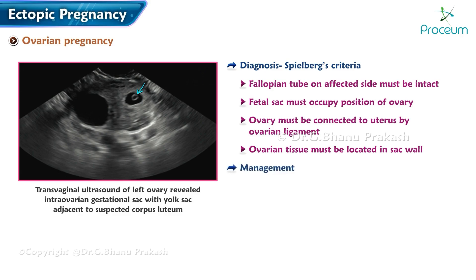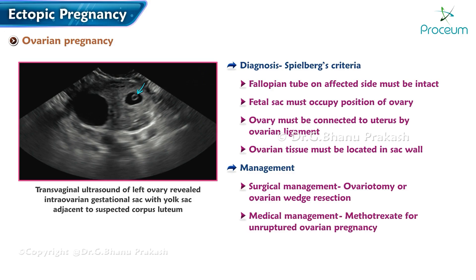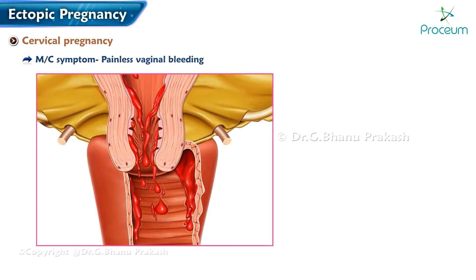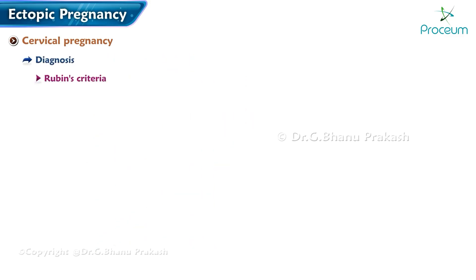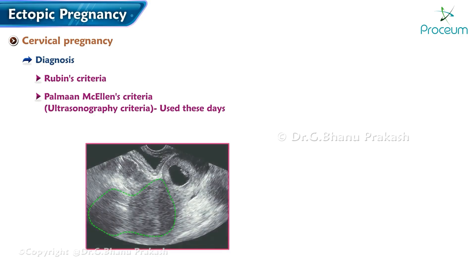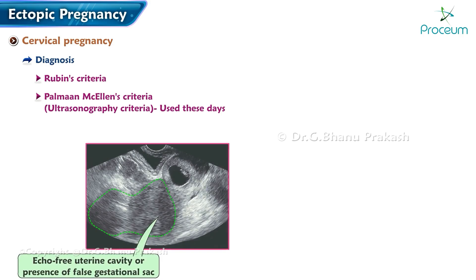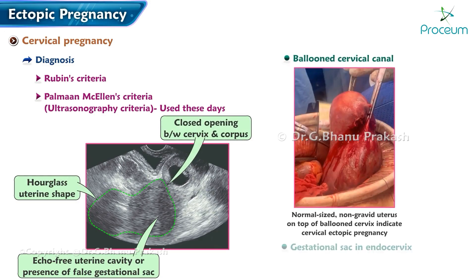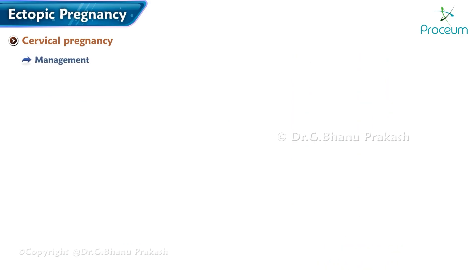Management of ovarian pregnancy: ovariotomy, ovarian wedge resection, or medical management with methotrexate for unruptured ovarian pregnancy. Cervical pregnancy: the most common symptom is painless vaginal bleeding. Diagnosis uses Rubin's or Paalman-McElin's criteria; ultrasonography criteria are currently preferred. Key ultrasound findings include an echo-free uterine cavity or false gestational sac, hourglass uterine shape, closed internal os, ballooned cervical canal, gestational sac in the endocervix, and placental tissue in the cervical canal.